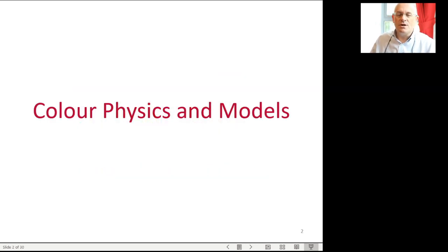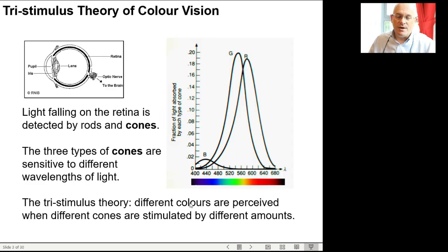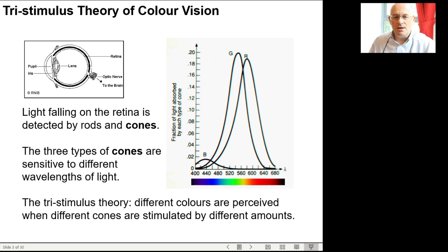The starting point for the discussion is color physics and color models. Color is a difficult thing because it's very subjective, but if you look at the beginnings of color in optics, it's to do with wavelength and our ability to perceive different wavelengths separately, so that we can separate out and label colors as different wavelengths of light.